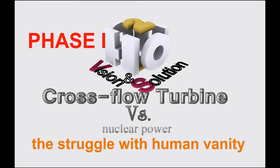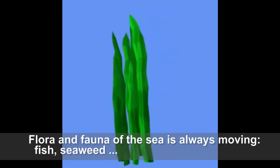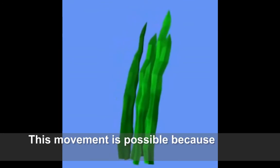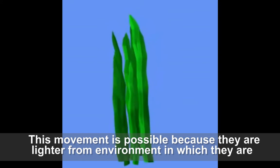Phase 1: The Struggle with Human Vanity. Flora and fauna of the sea is always moving - fish, seaweed. This movement is possible because they are lighter than the environment in which they are.